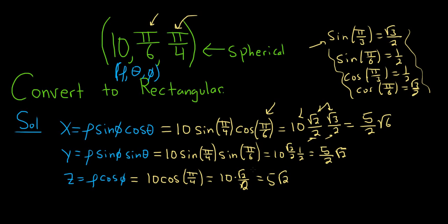So our final answer is an ordered triple in space, and it can be written in the form x, y, z. The x-coordinate is 5 halves times the square root of 6. The y-coordinate is 5 halves times the square root of 2. And the z-coordinate is 5 times the square root of 2. And that would be the answer to the problem.